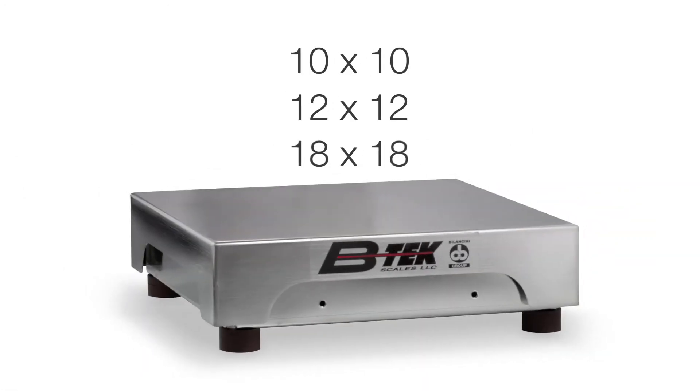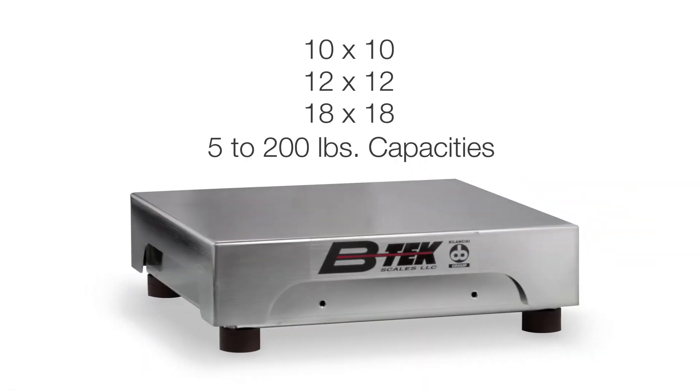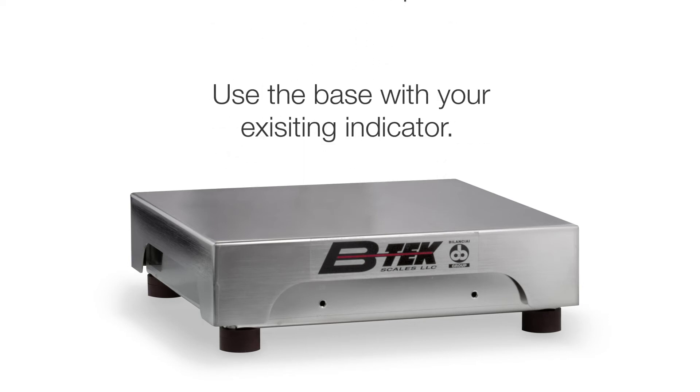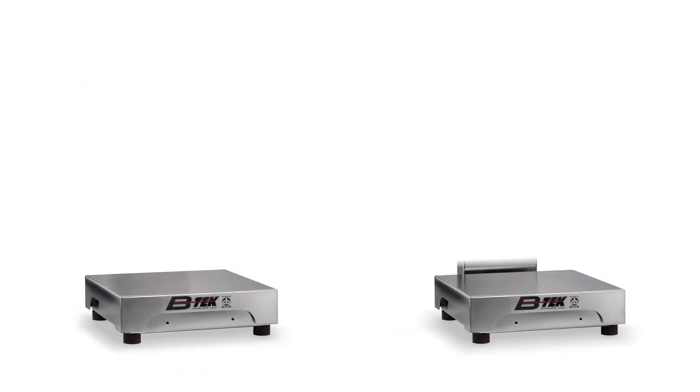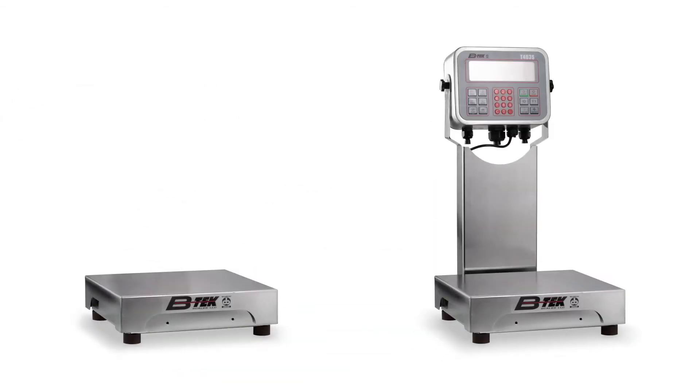The AquaShield is also available in three sizes, with capacities of 5 to 200 pounds. The scale can be purchased as a solo base unit to complement your existing indicator, or as a complete kit, which includes column and our T-series indicator.